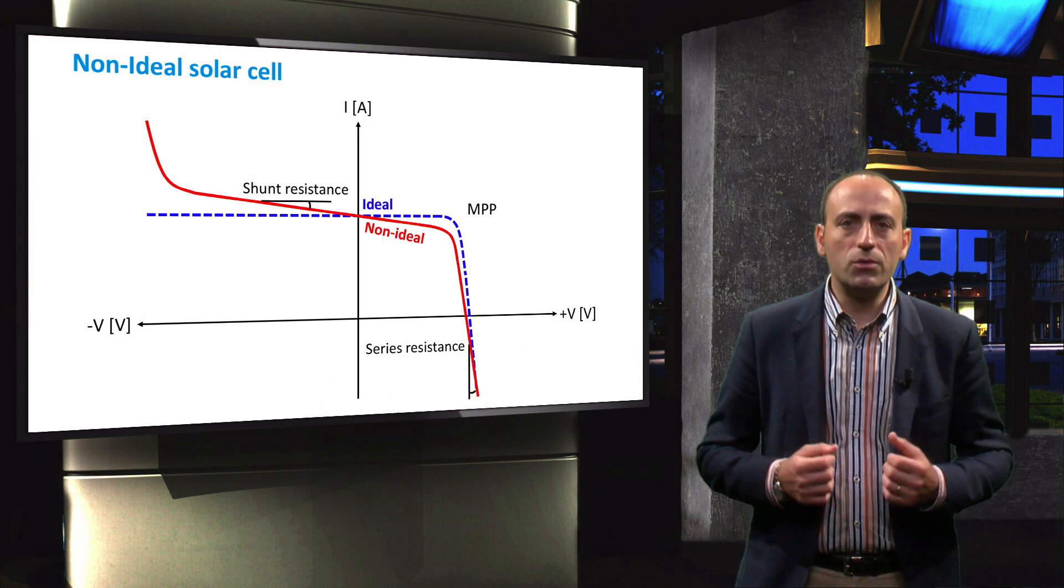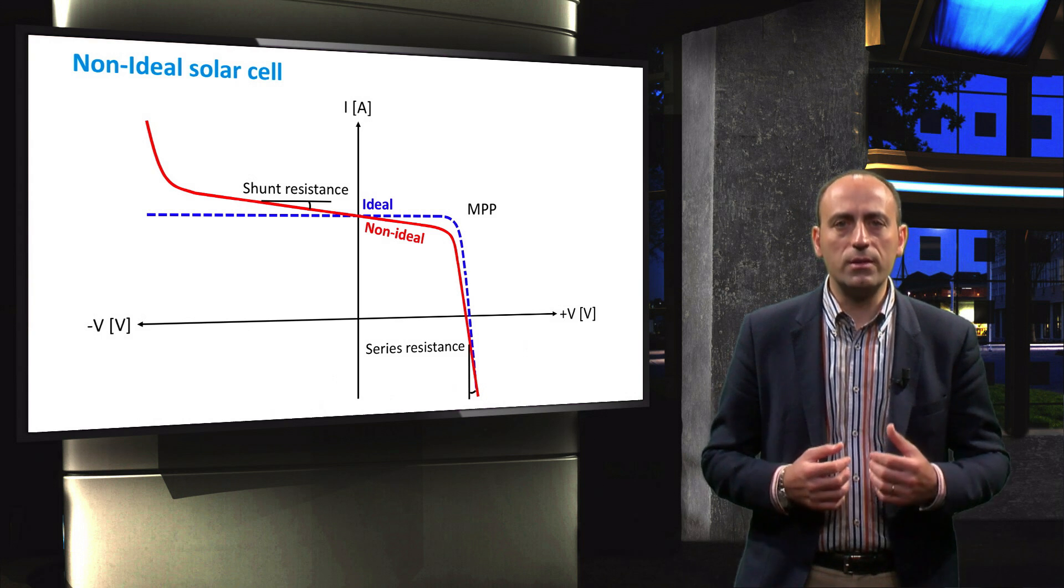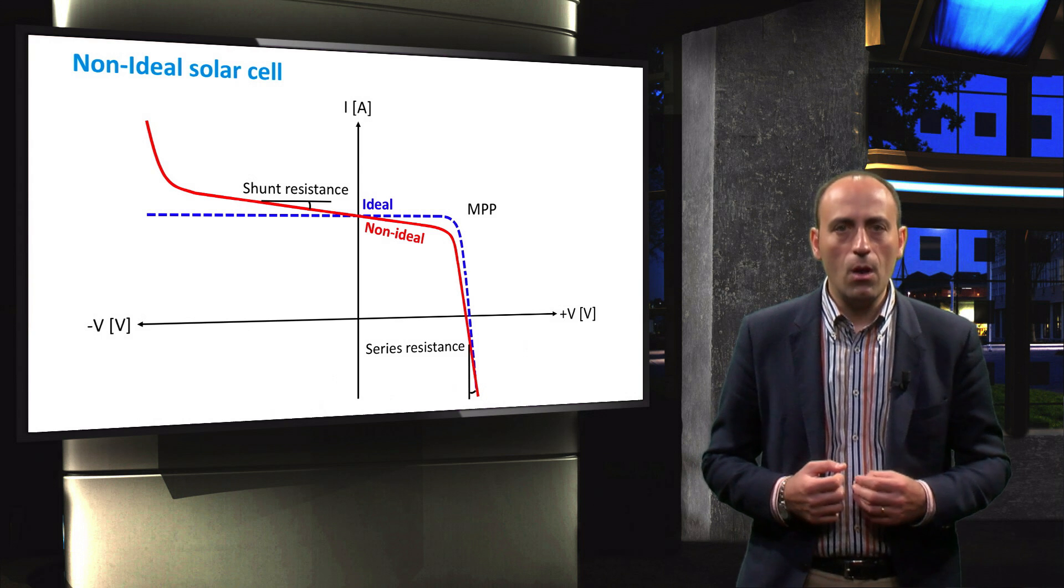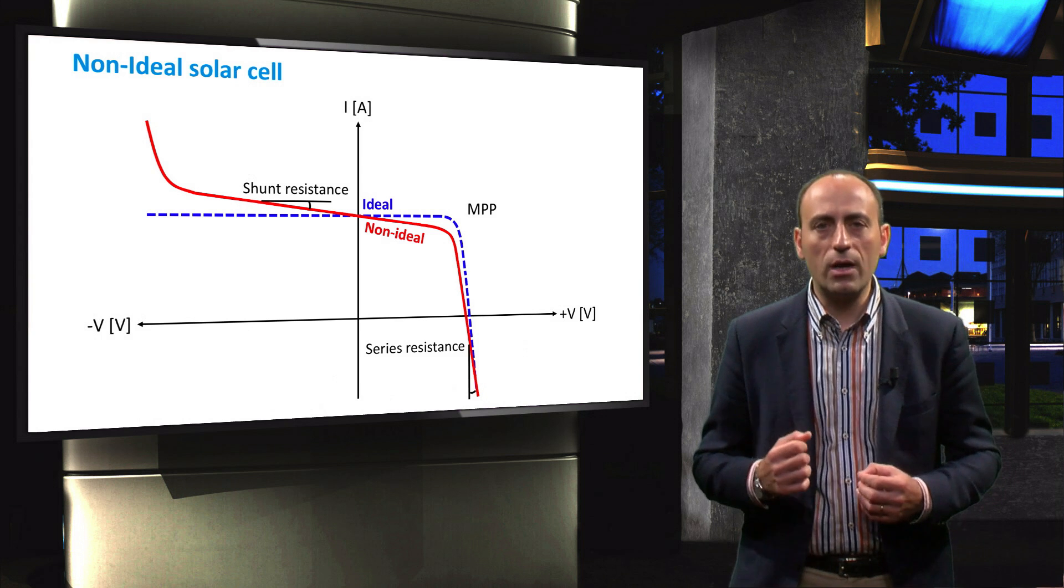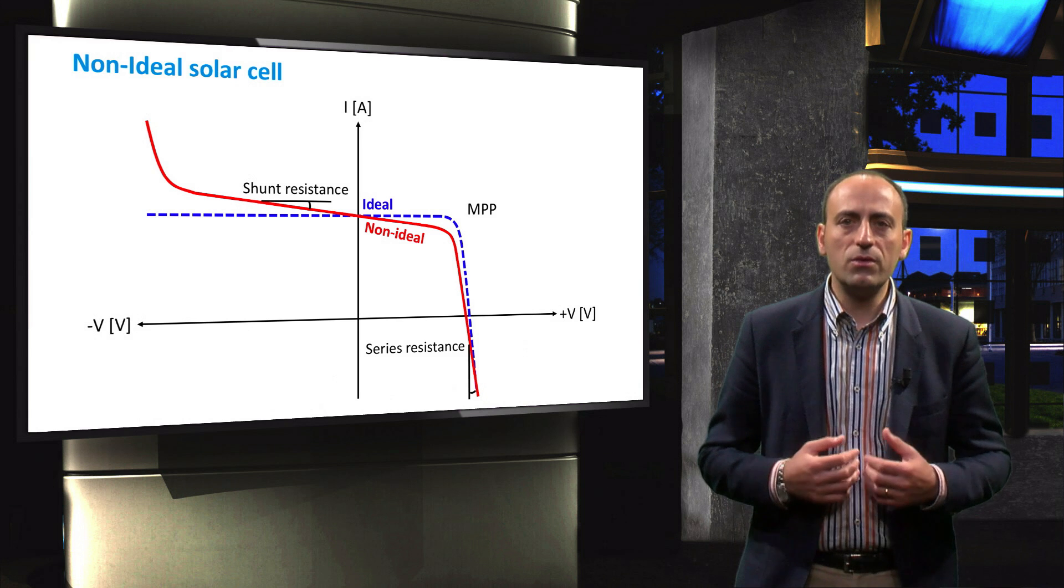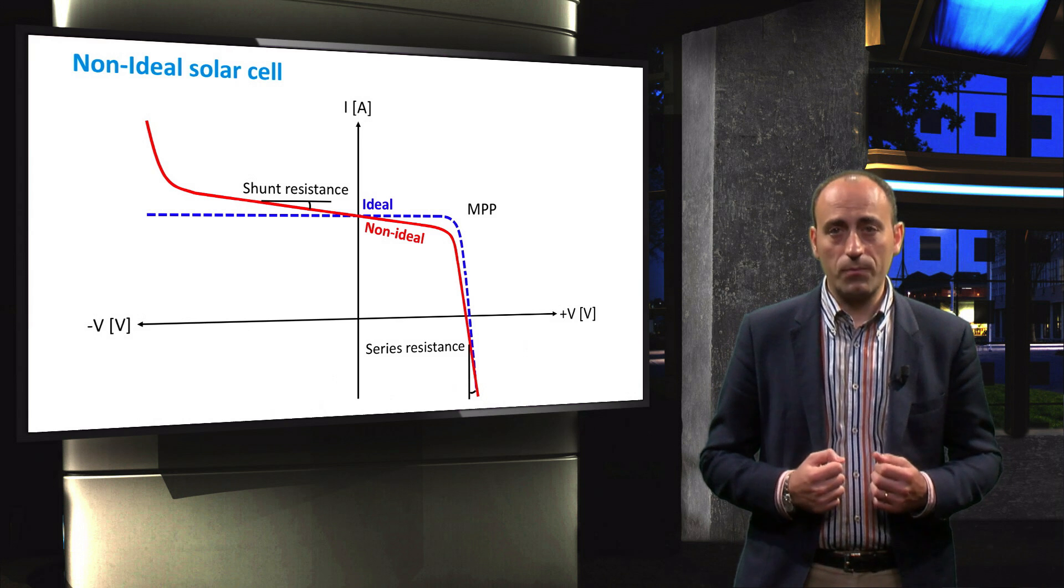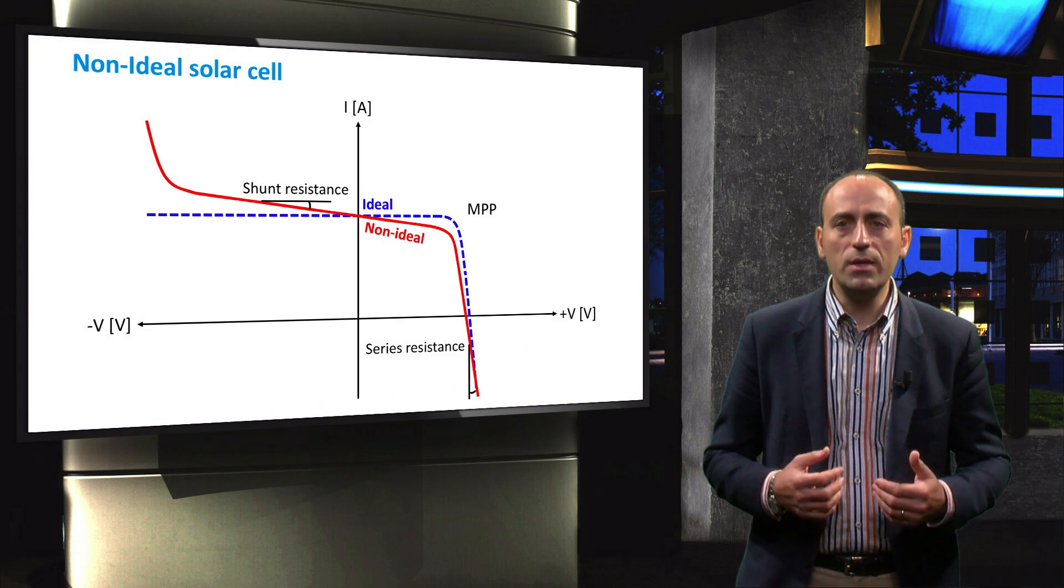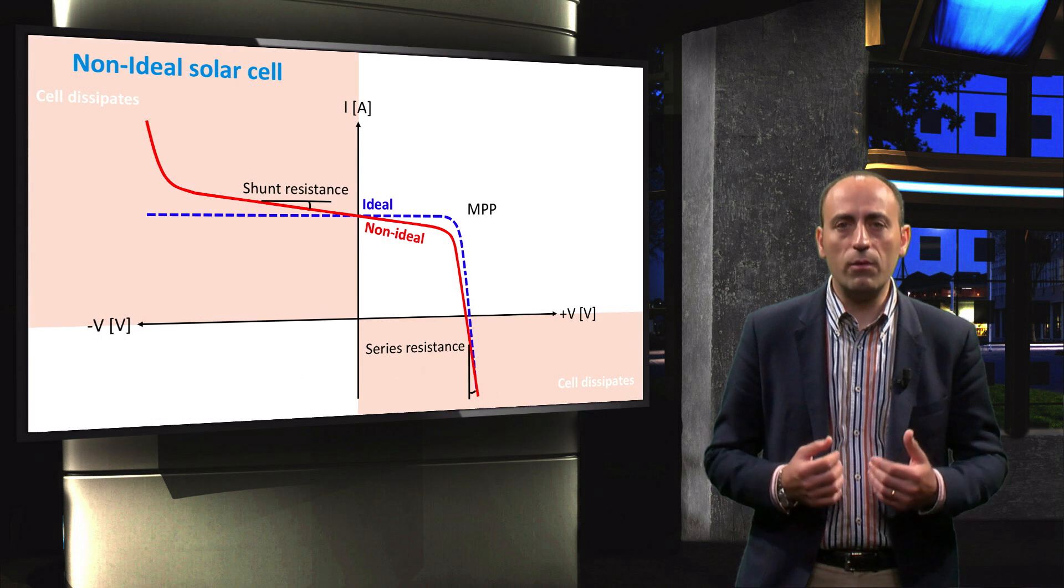Now, it is important to note that there are four quadrants in this IV coordinate system. When either the voltage or current is negative, then the resulting power is also negative. This means that the solar module is dissipating power in the form of heat.